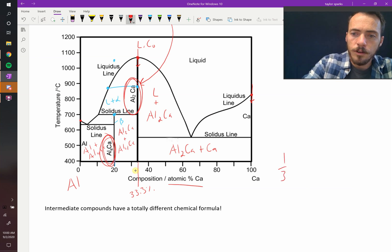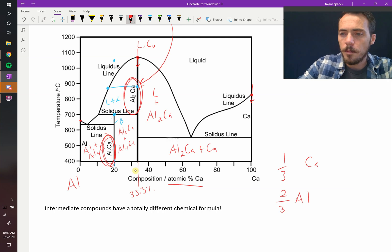If one-third is calcium and two-thirds are aluminum, then the formula must be Al2Ca. Over here, it's easy as well.